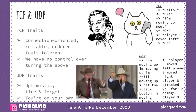What networking talk wouldn't be complete without a quick overview of TCP versus UDP? The traits of TCP are that it's connection-oriented, reliable, ordered, and fault-tolerant. You create the socket, you send things, you receive things — it's going to happen in the correct order and nothing unexpected will happen. However, we don't have any control over the tuning. If anything interrupts the connection and the message needs to be re-communicated, we don't really know that's happening — it happens on its own and we as developers just have to trust and wait.